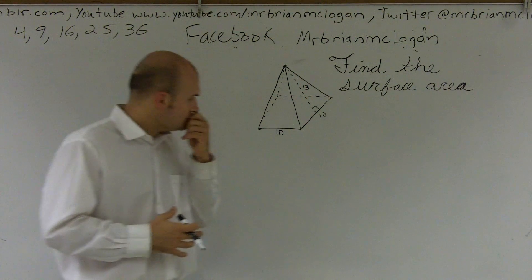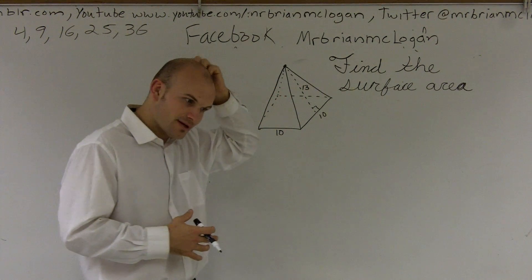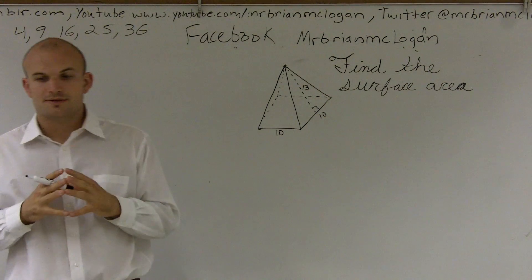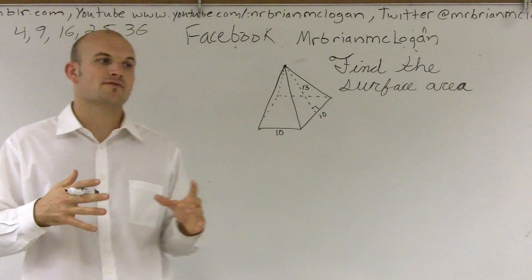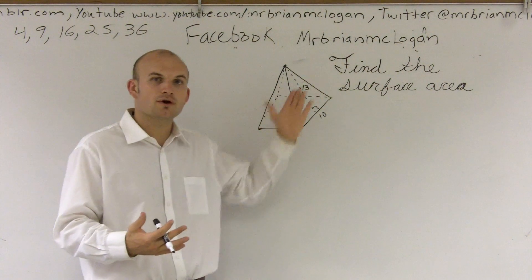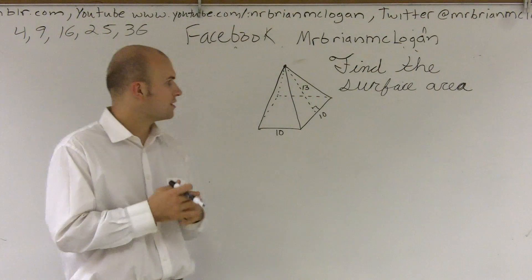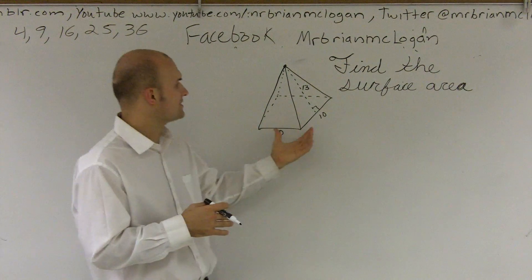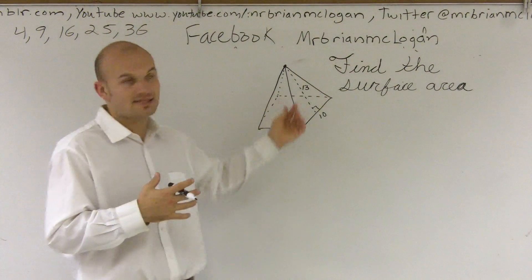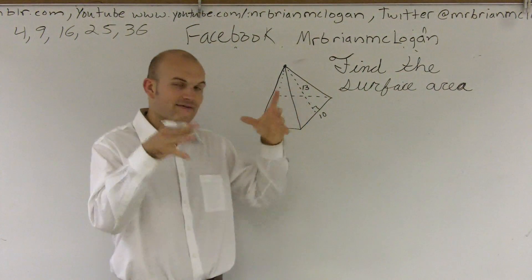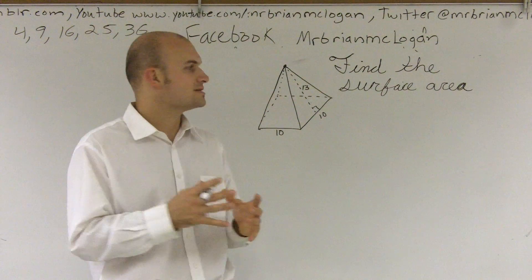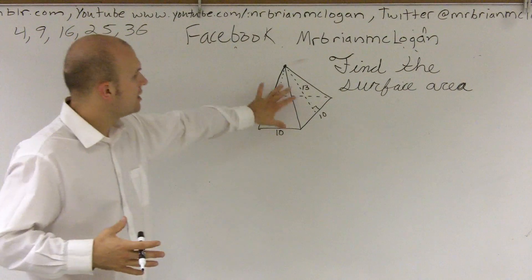So what we have is a pyramid here. With this pyramid, what we're going to try to find is the surface area. You can think of the surface area as: if I had to paint something, I would need to make sure I covered the whole surface. Or, if I was going to drop this in water, the surface area would be everything that gets wet — nothing on the inside, but everything on the outside. So we need to figure out all of this area that is covering up this pyramid.